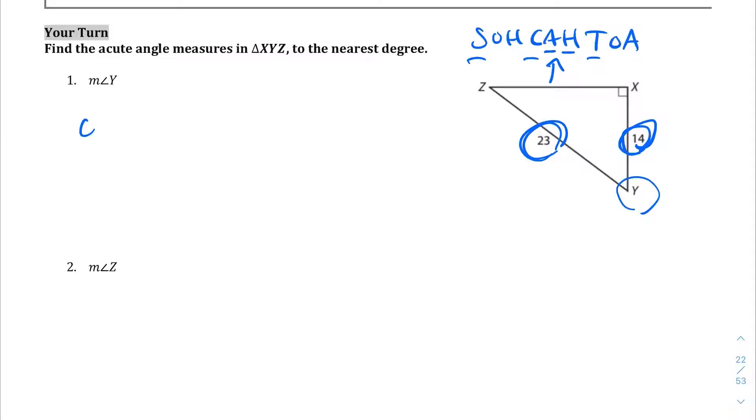So, that's what I'm going to use. So, the cosine of Y is going to equal the adjacent, which is 14, over the hypotenuse, which is 23. And so, let's pull up the Desmos calculator.